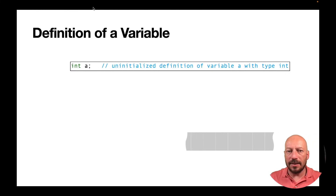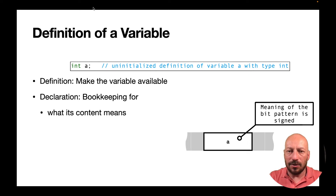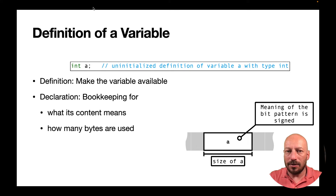When talking about variables in C, it always means that one memory cell or a block of memory cells is used for storing the value of that variable. Here you see an example of defining a variable called A of type int. Because it's a definition, some assembly code is required so that the program can make use of these memory cells. The compiler's internal bookkeeping tracks the meaning of the bit patterns stored — in this case a signed integer value — as well as the number of memory cells used (the size) and the location in memory (the address, which is the address of the first memory cell used for this variable).